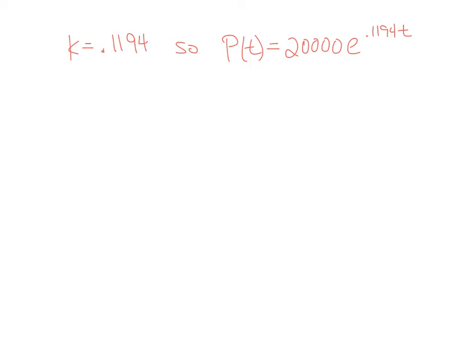Since we know k equals 0.1194, we can put that into the exponent of the original equation. Now we have an equation that we can work with, and we can use it to tell us what we should expect the population to be in 2007.